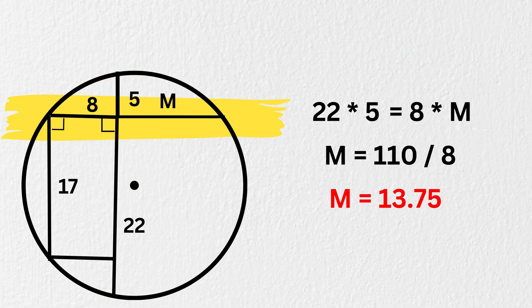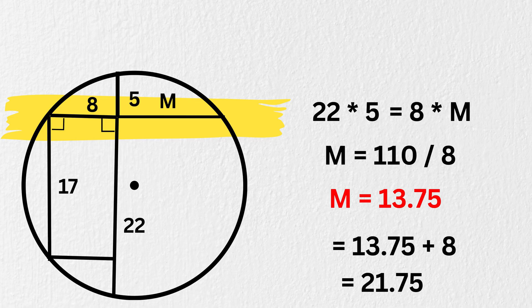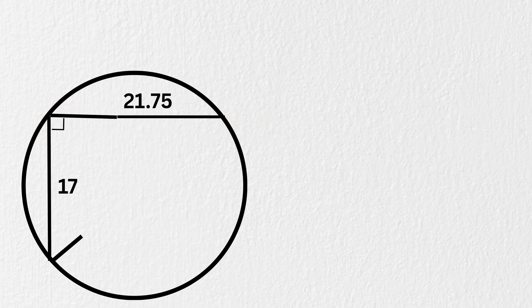So what will be the length of this chord? It will be 13.75 plus 8, or 21.75 units. Again, let us clear the things and remove the unnecessary lines.